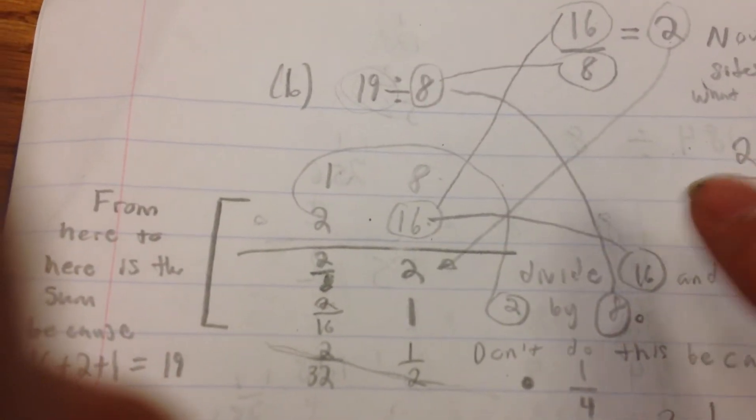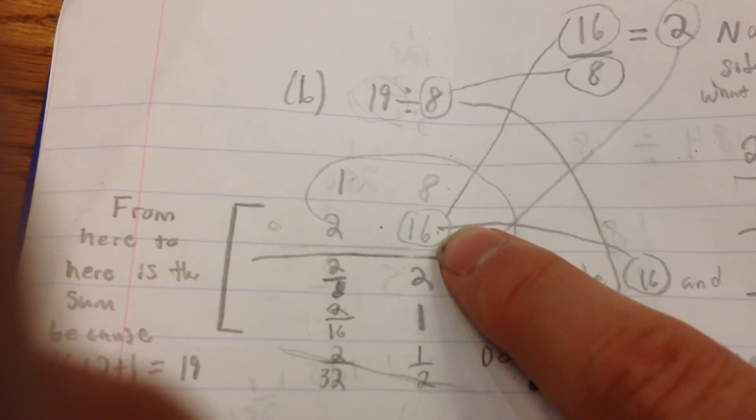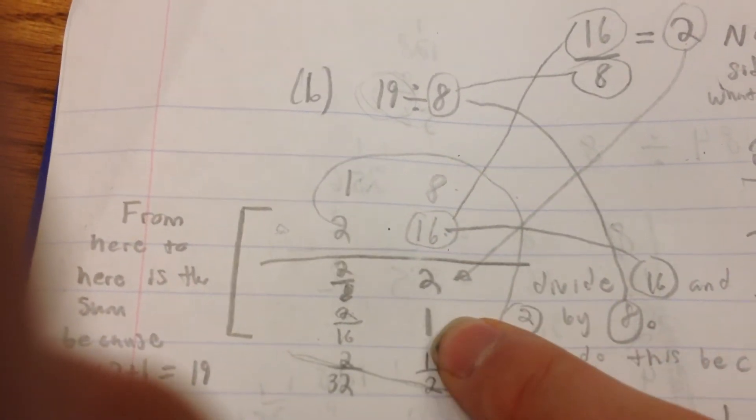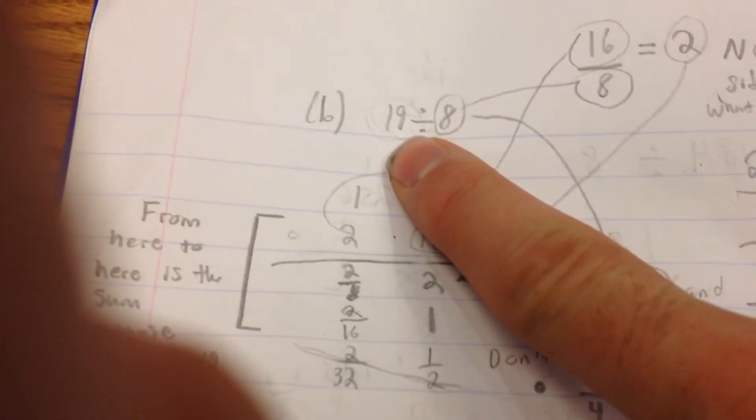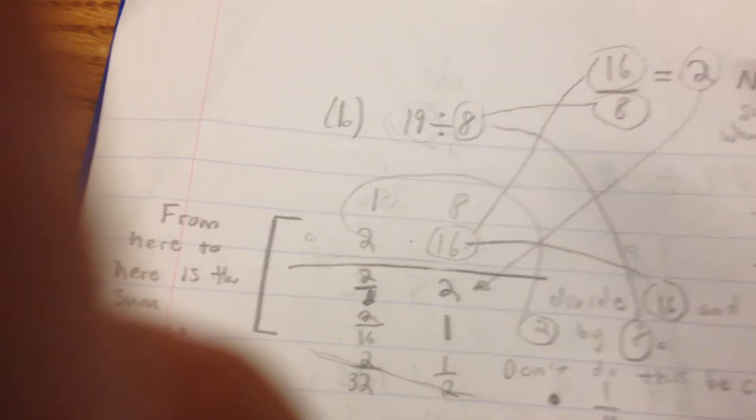Now, we don't actually include this part that I've crossed out here because 16, 17, 18, and 19, these all add up to 19, and that's what you want to do here.